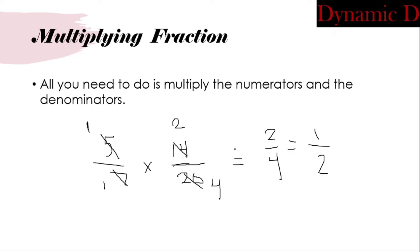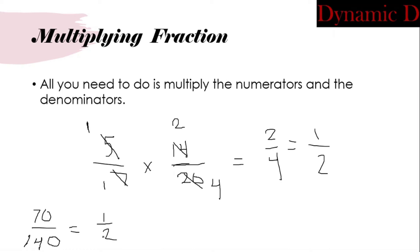To verify: if I were to multiply five times fourteen that's seventy, over seven times twenty which is one-forty, and seventy over one-forty is one-half. So the answer is the same. It's always better to use the cross-cancellation shortcut because it makes simplifying easier at the end.